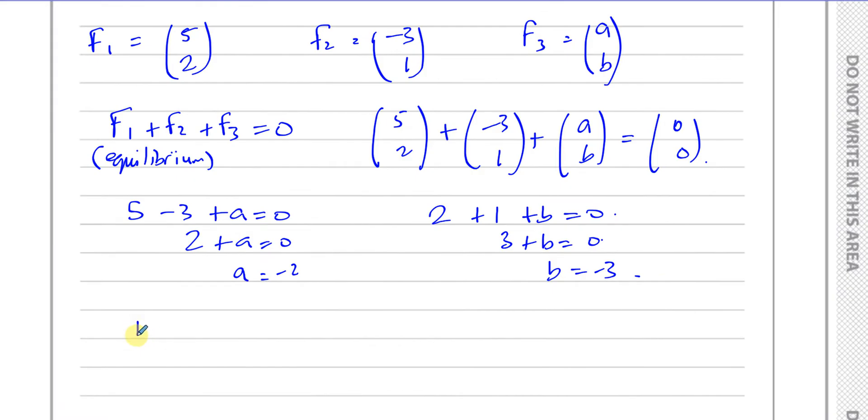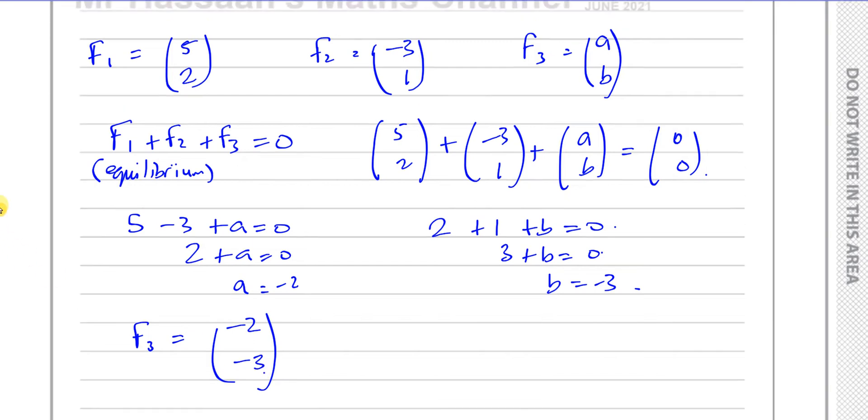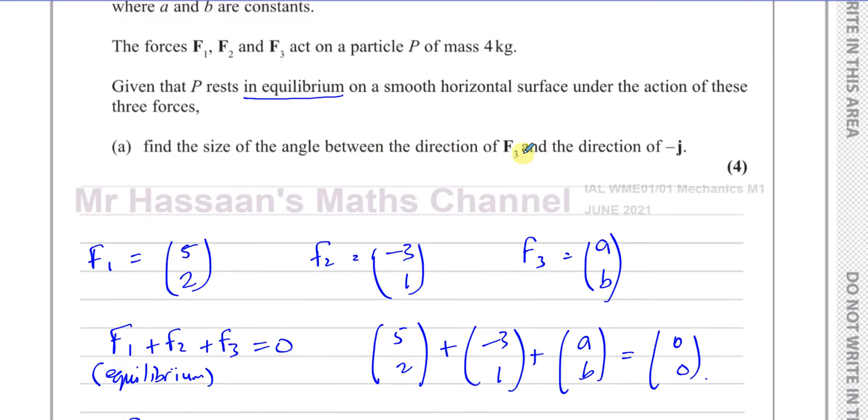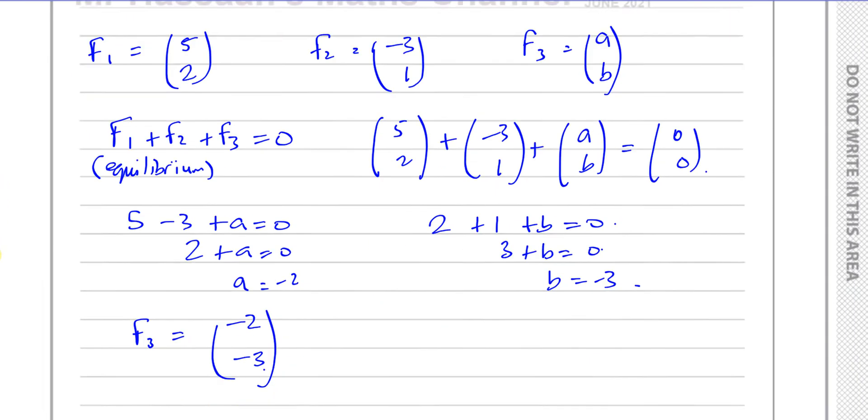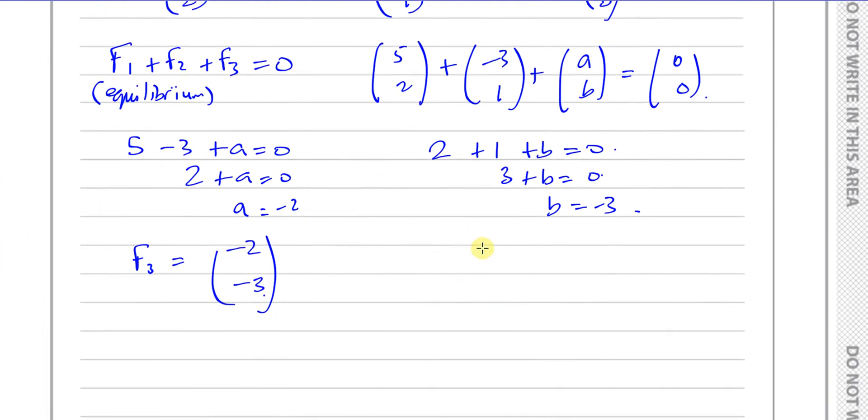So the force F3 therefore is equal to (-2, -3). Now we need to find the angle between the direction of F3 and the direction of negative j. Negative j is vertical, but in this direction here. This is negative j. And (-2, -3) will go in this direction like this.